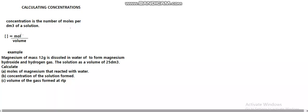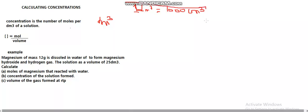Concentration is equal to the number of moles over volume. This volume must be in decimetres cubed. If your volume is not in decimetres cubed, make sure you convert it. One decimetre cubed is equal to 1,000 cubic centimetres — that's what you must know.